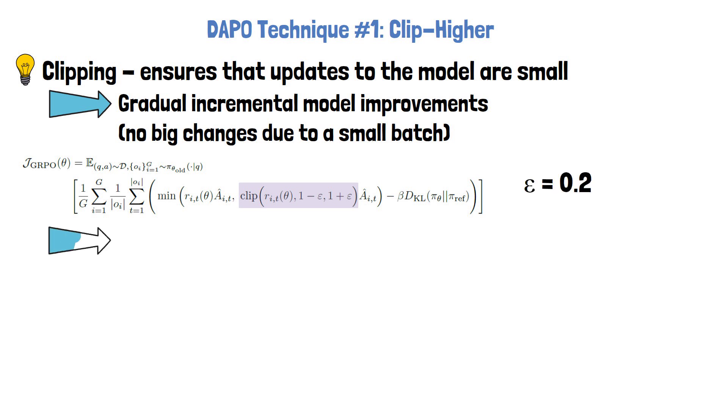The researchers found that clipping causes entropy collapse. Entropy collapse is a phenomenon where the model becomes too confident about certain deterministic options. The lack of randomness can prevent the model from exploring different solutions. The underlying issue is that clipping favors responses with already high probability, which may limit exploration for low probability responses.